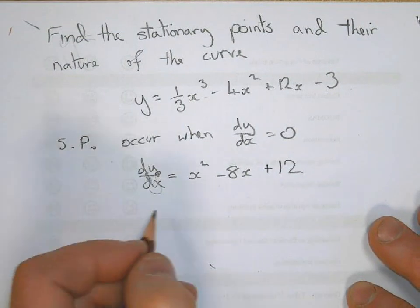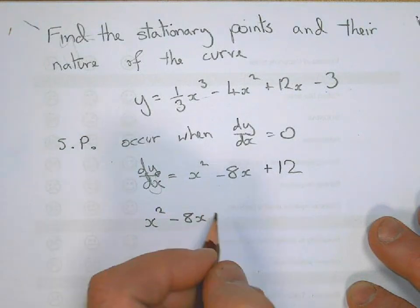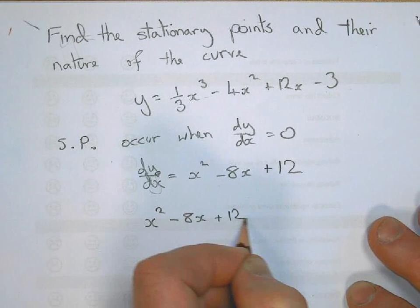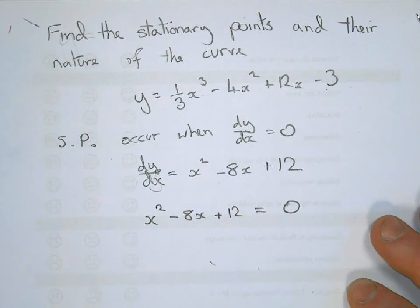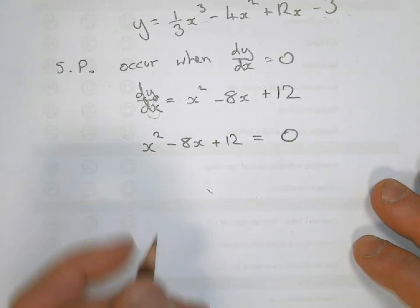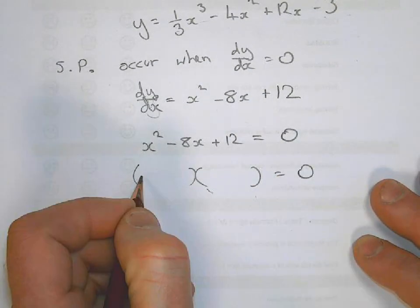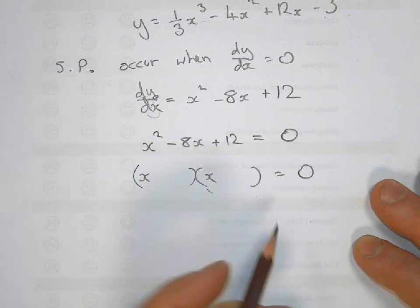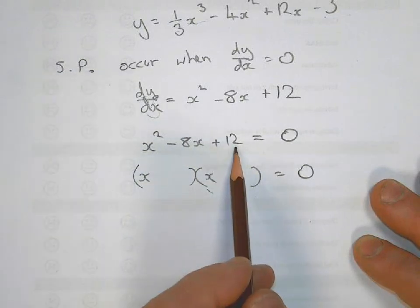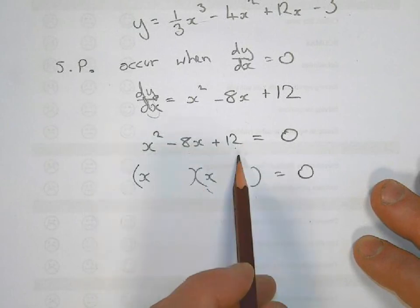So dy/dx equals x squared minus 8x plus 12. We now want to solve this to find when x squared minus 8x plus 12 equals zero. And to do that, you have to factorize it. So it's going to be x there, x there. We need two numbers that multiply to give you 12 and add and subtract to give you 8. 6 and 2 would be perfect.